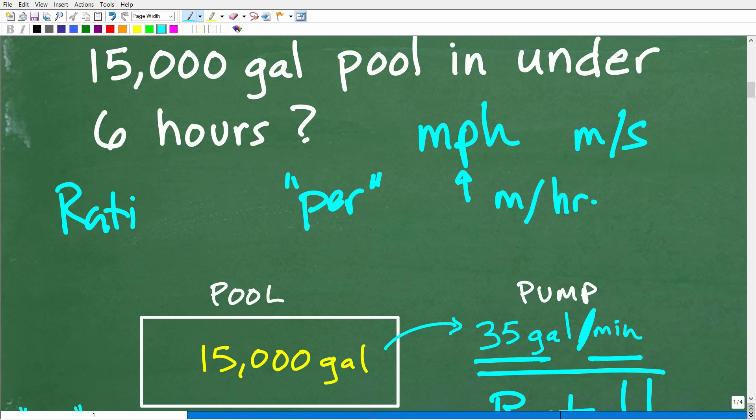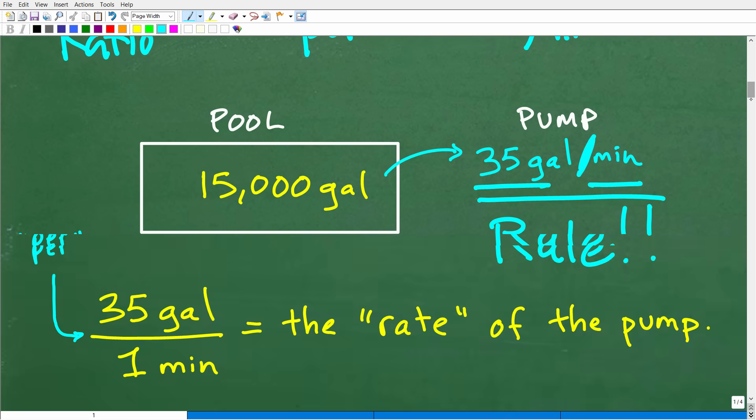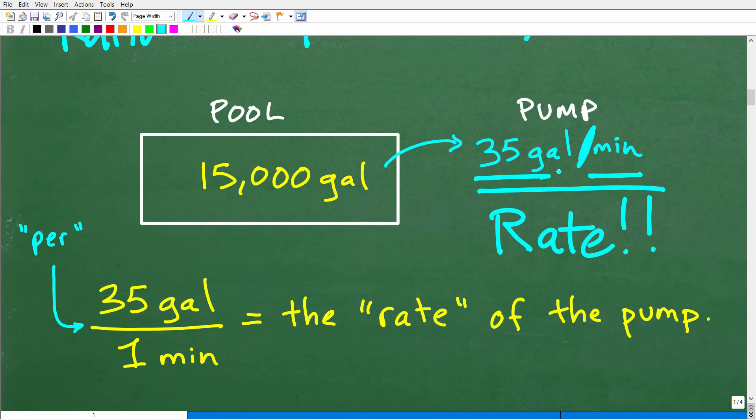And when you think about rates, we also have something, it's kind of cousin, is a ratio. Okay. And so when we have rates and ratios, we are talking about fractions with particular units of measure. And the way you solve rate and ratio problems is by using a proportion. And that's what we're going to be doing here in a second. But let's just make sure we understand what 35 gallons per minute means. Okay. So again, this is a rate, but it's effectively a fraction. Okay.